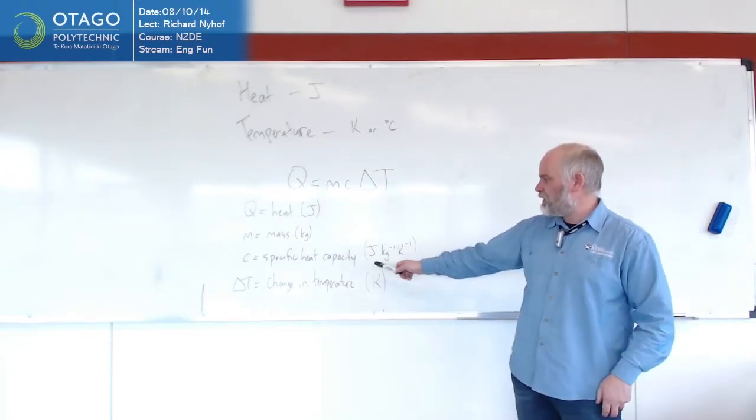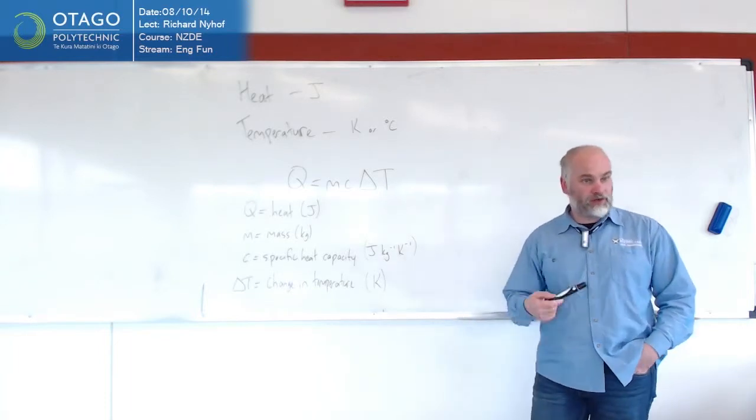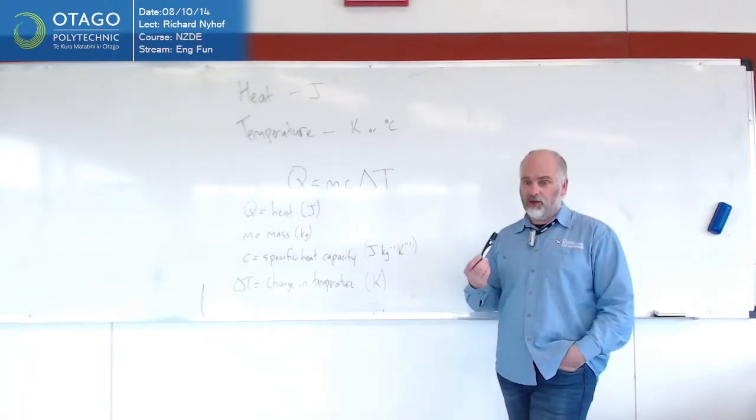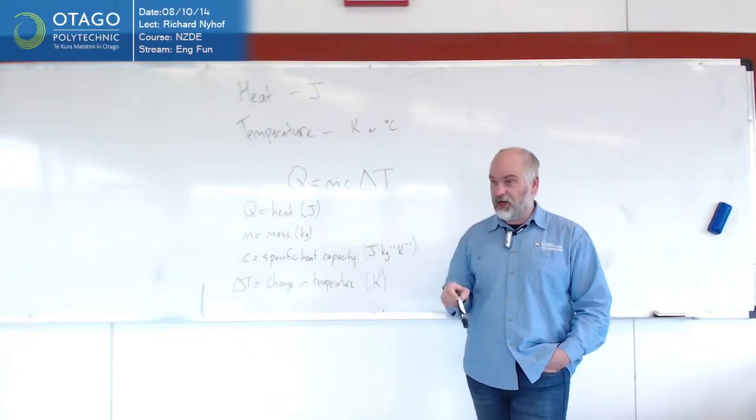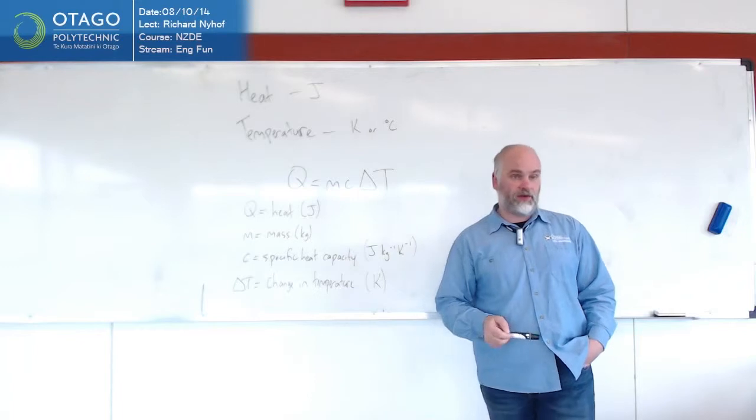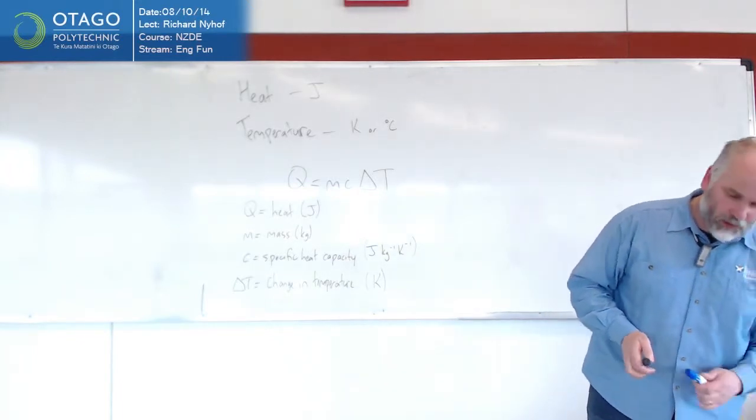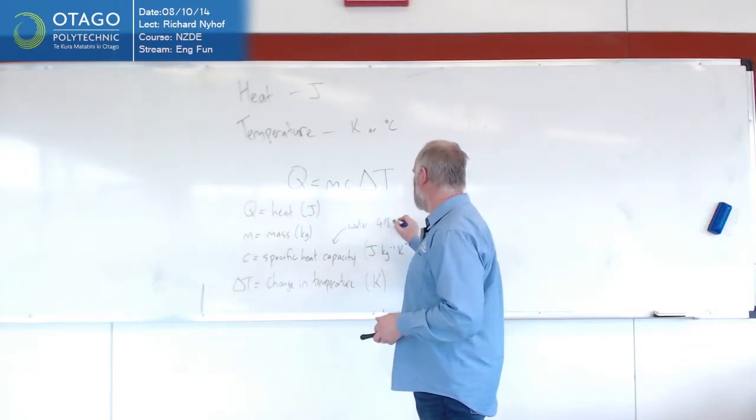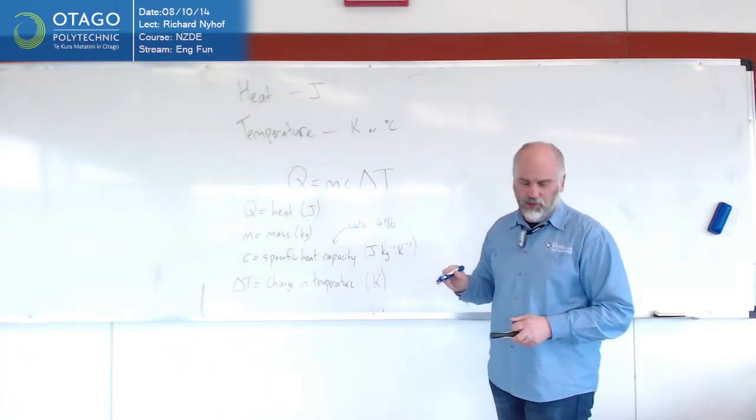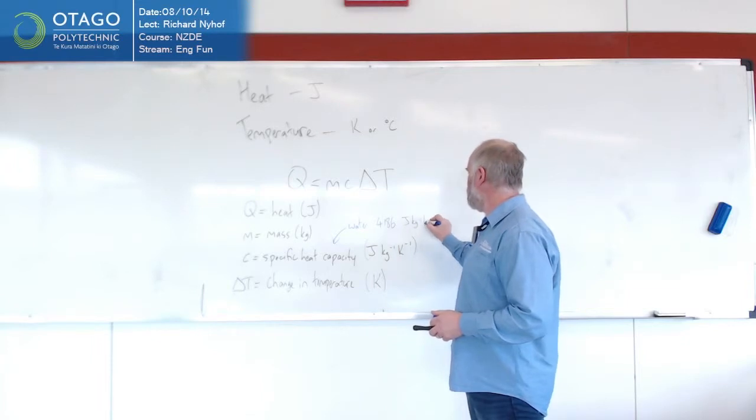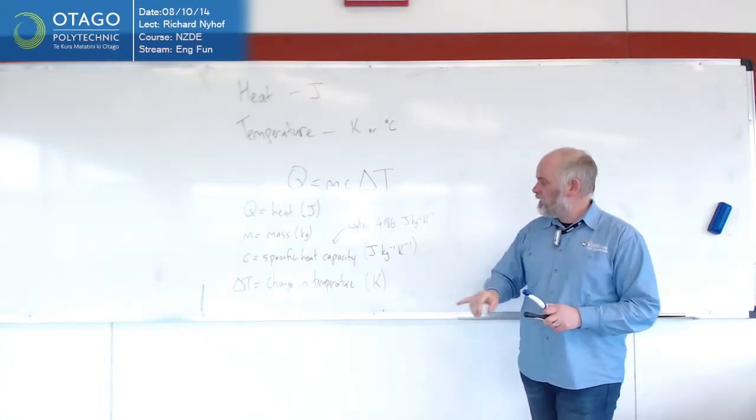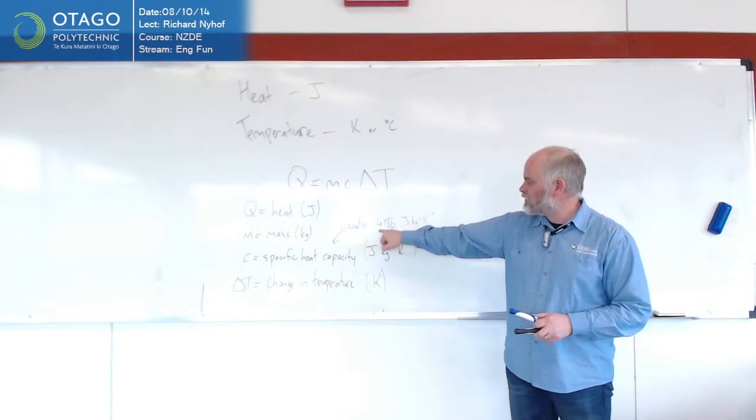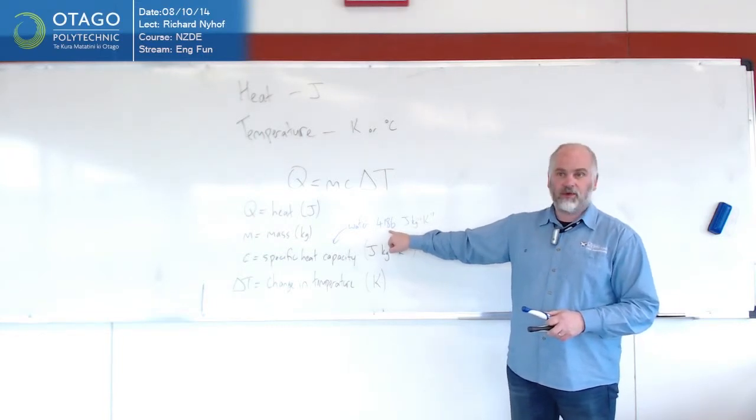Those are the things that you need. The fun one is the specific heat capacity, and that depends on the material. Different materials have different specific heat capacities. You basically need to look those up on a table. In the formula sheet you get for the exam, it has a data table that includes specific heat capacities. For water, the specific heat capacity is around 4,200, so 4186 joules per kilogram per Kelvin. That means every kilogram of water, every degree you want to raise it by, costs you four kilojoules.